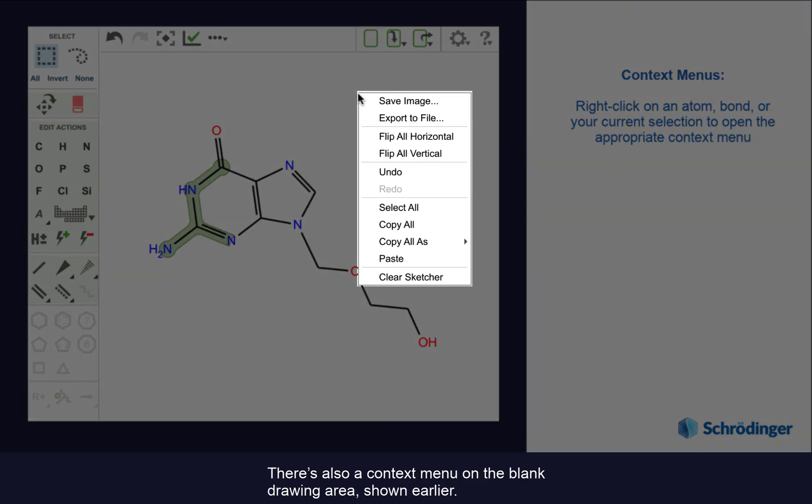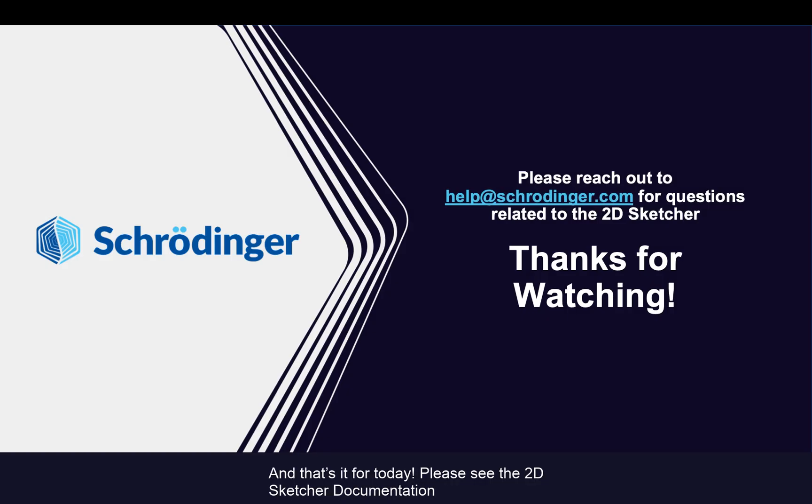There is also a context menu on the blank drawing area, shown earlier. And that's it for today. Please see the 2D sketcher documentation and quick reference sheet for more information.